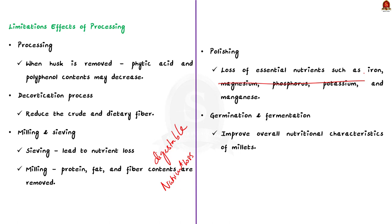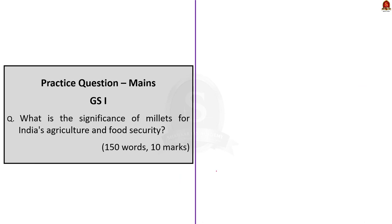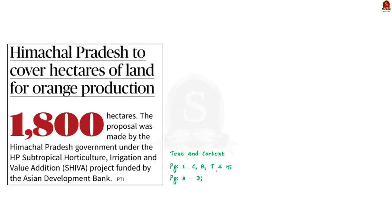That's all from the millets news article discussion — we saw in detail about millets, their nutrient content, and how processing affects nutritional value. The next article: Himachal Pradesh government has made a proposal to cover 1,800 hectares of land for orange production under the Himachal Pradesh Subtropical Horticulture Irrigation and Value Addition project (SHIVA), funded by the Asian Development Bank. In this context, let us understand horticulture and important government initiatives to promote it. The term horticulture is derived from the Latin words hortus (garden) and cultura (cultivation), referring to crops cultivated in an enclosure.